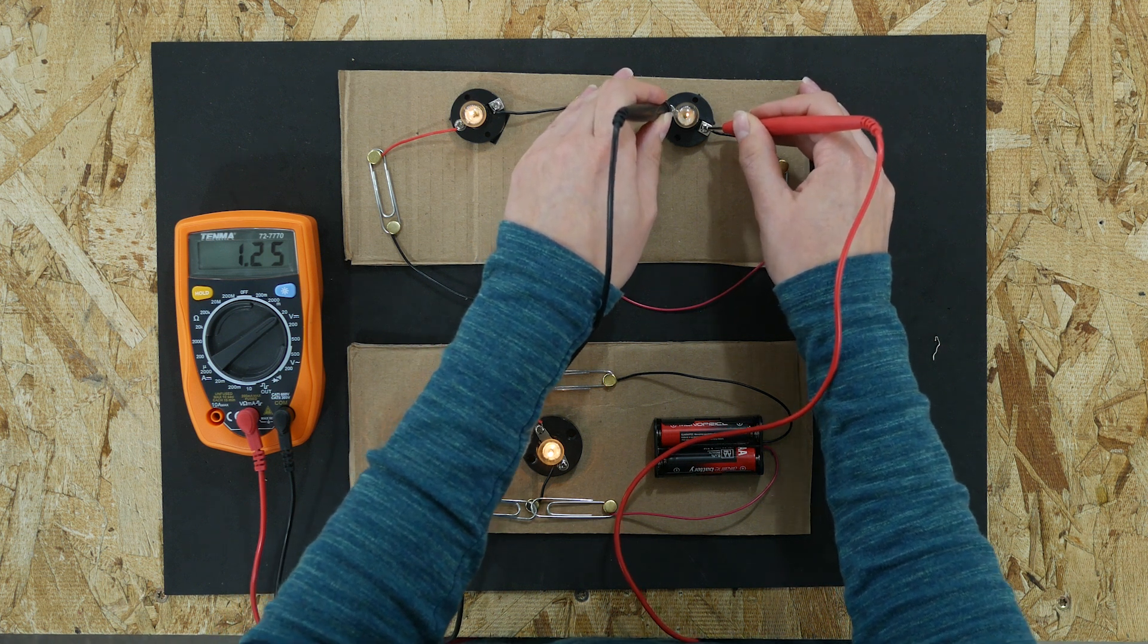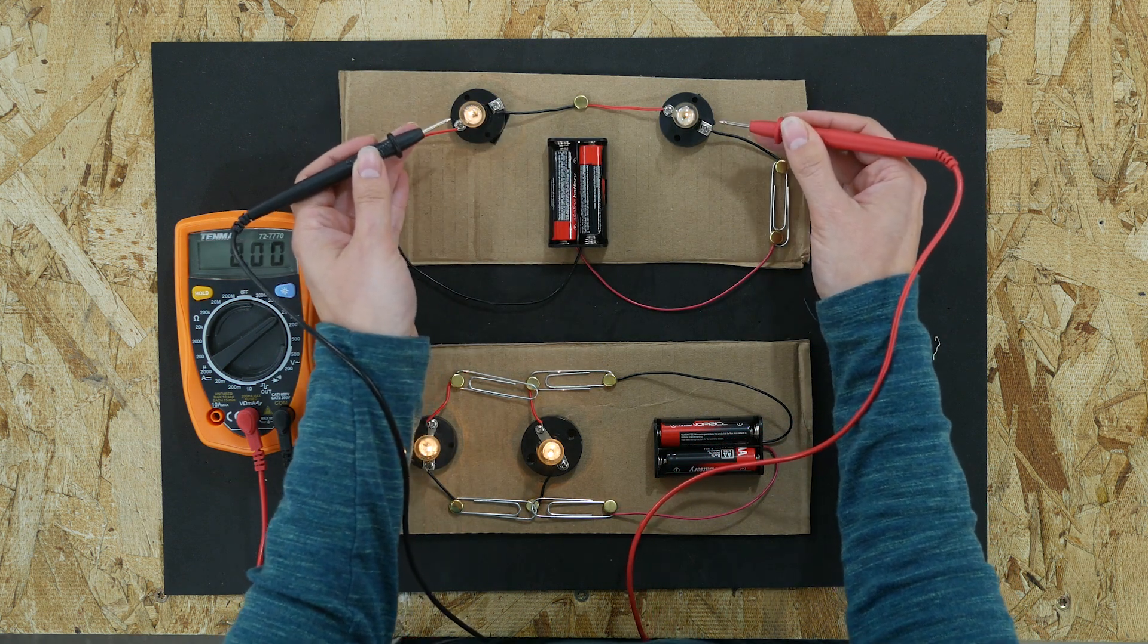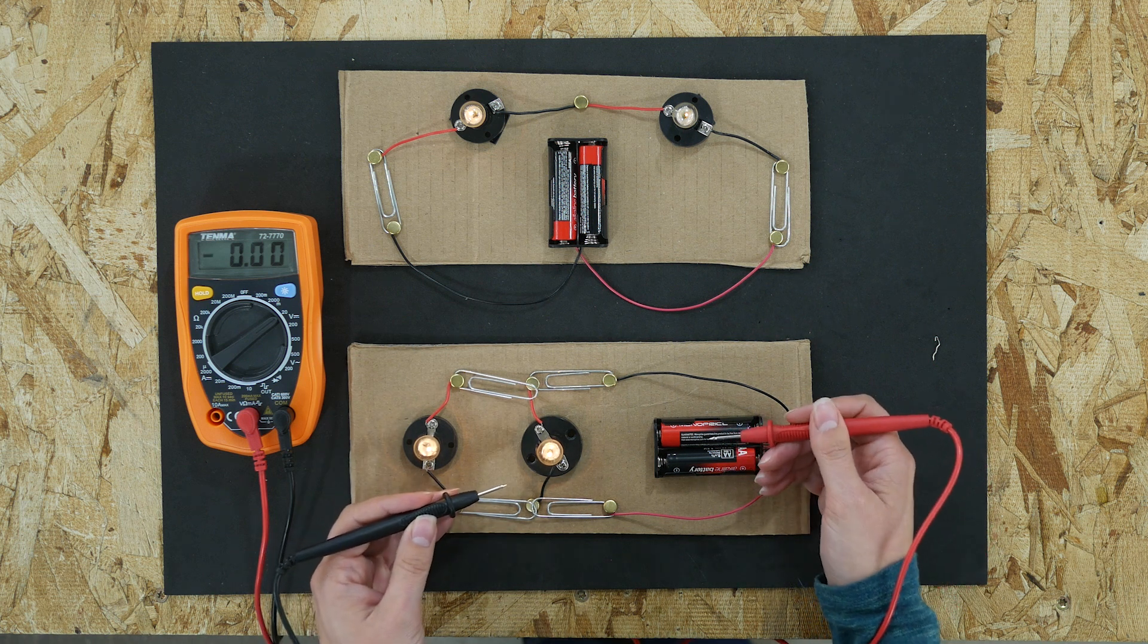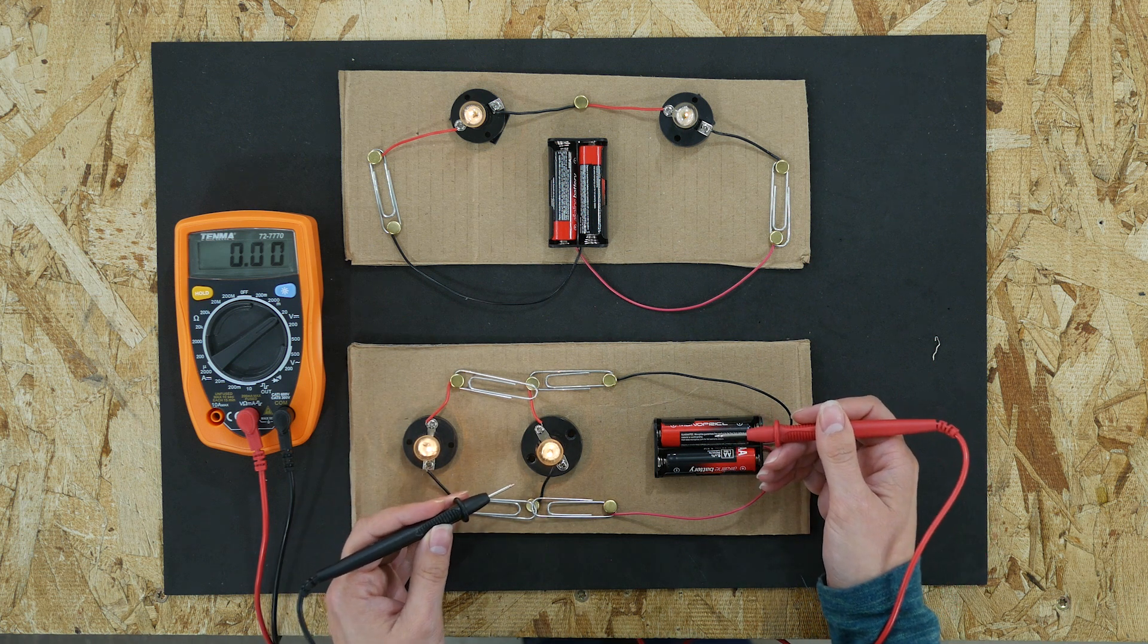If you add those two together, these two light bulbs in the series circuit are sharing the 3 volts from the batteries, whereas in the parallel circuits, they're each getting about 3 volts. Equal power from the batteries.